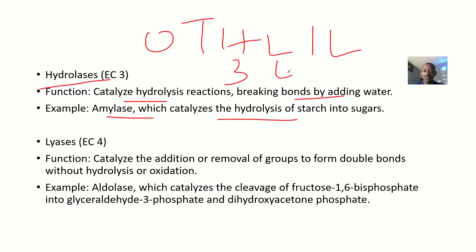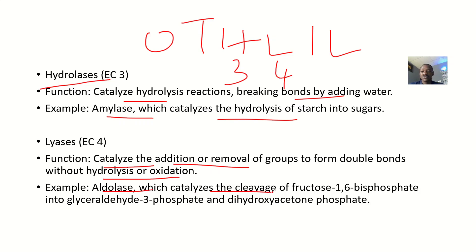We are on the fourth one now, which is lyases. Lyases function to catalyze the addition or removal of groups to form double bonds without hydrolysis or oxidation. Think of lyase as to 'lyse' something — break something down. An example of a lyase is aldolase, which catalyzes the cleavage of fructose-1,6-bisphosphate to glyceraldehyde-3-phosphate and dihydroxyacetone phosphate. You guys know where this is coming from? From the glycolysis pathway.